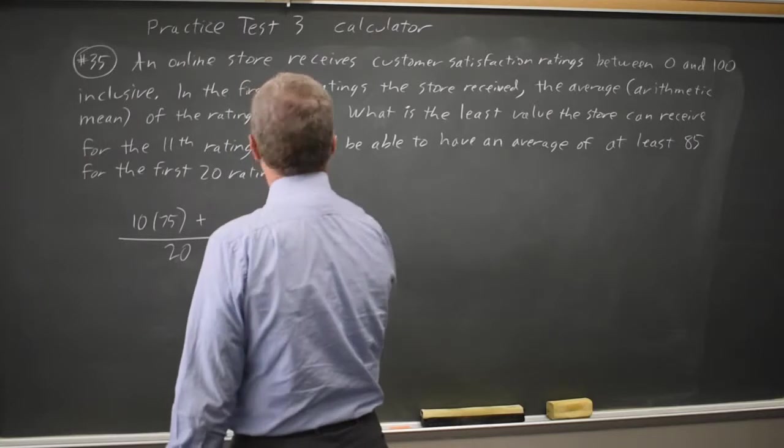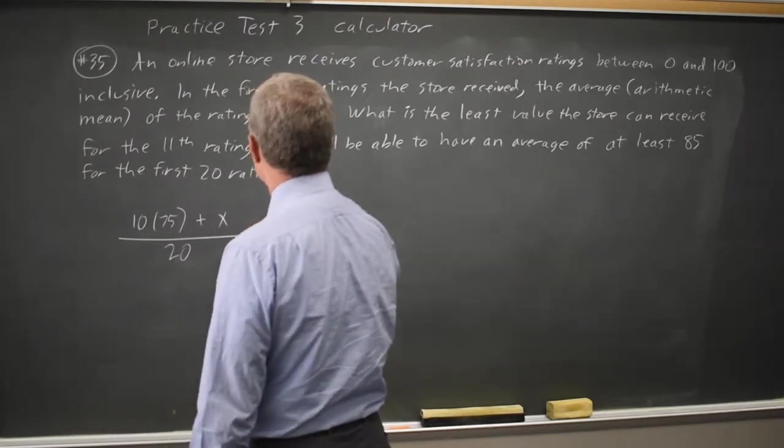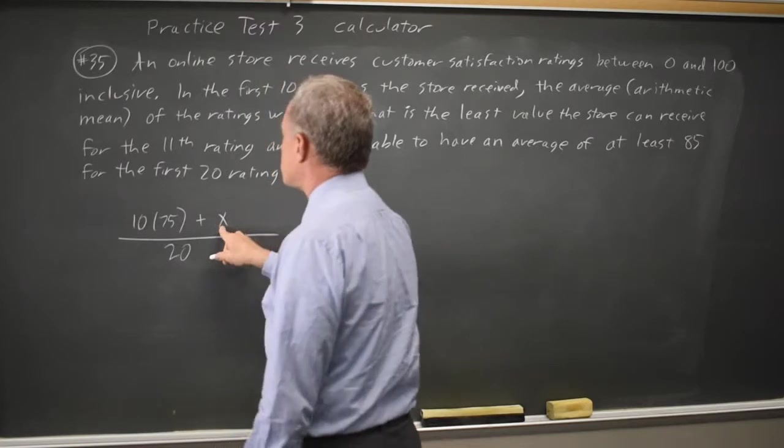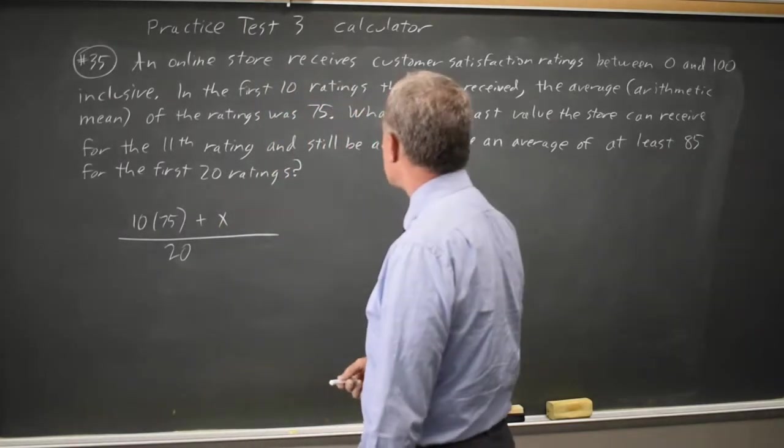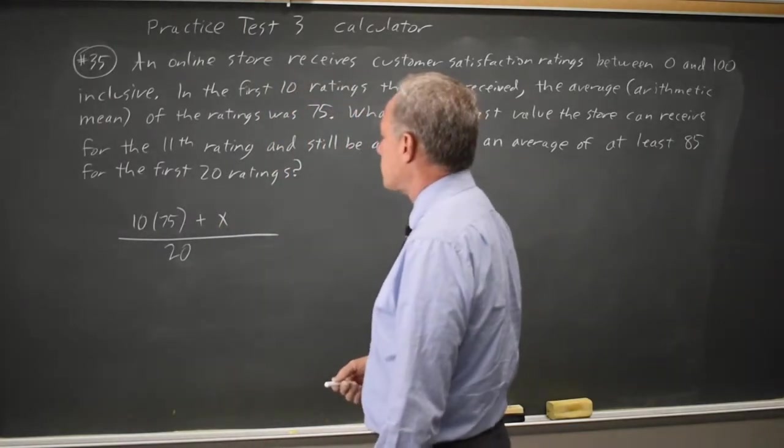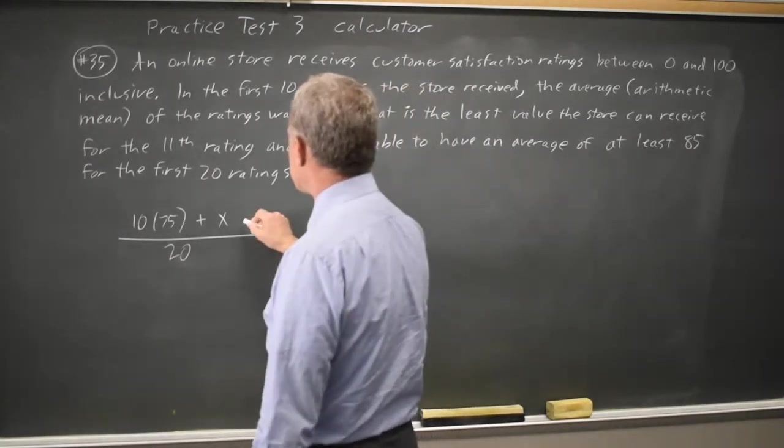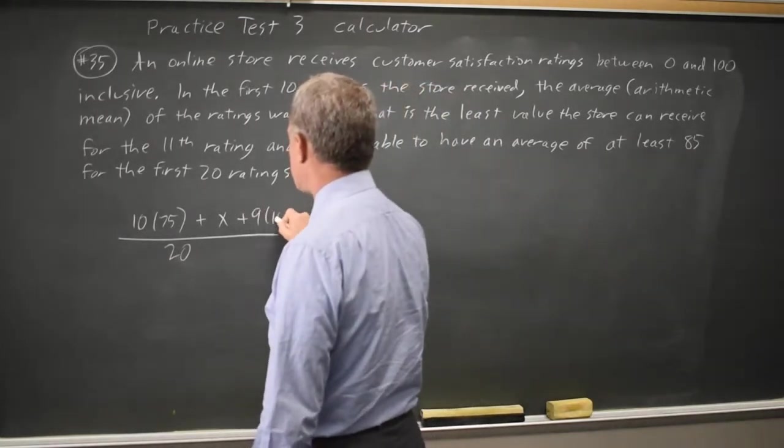The 11th rating is the one we're looking for. I'm going to call that X, and we want the lowest score for X, which means we want the highest possible score for the last 9 ratings for a total of 20 ratings. So those last 9 scores will all be 100.